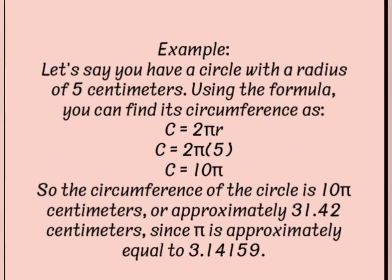Example: Let's say you have a circle with a radius of 5 centimeters. Using the formula, you can find its circumference as C equals 2 pi r, C equals 2 times pi times 5, C equals 10 pi.